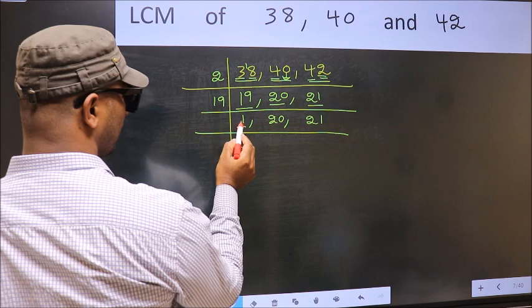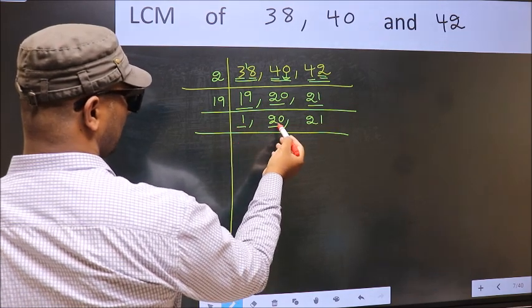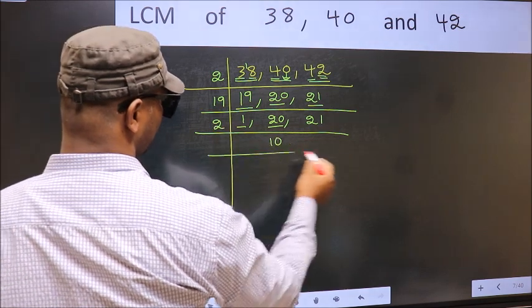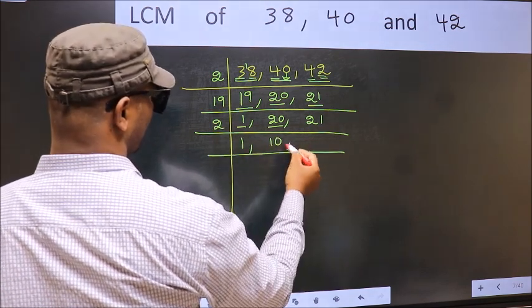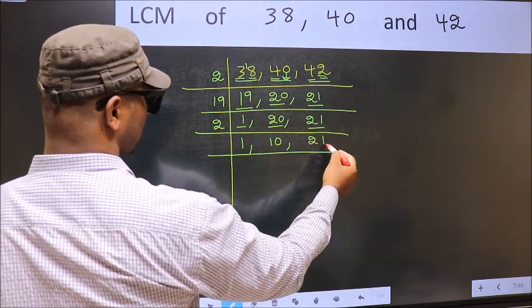Now we got 1 here. So focus on the other number 20. 20 is 2 times 10. The other number 21, not divisible by 2, so you write it down as it is.